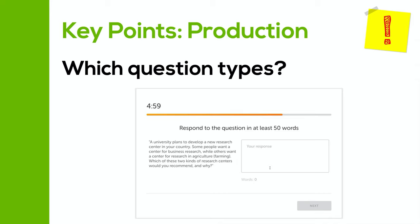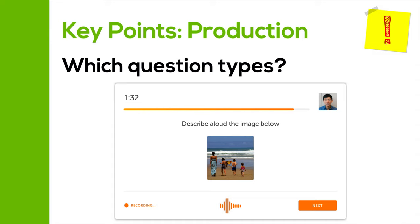So those are the two writing questions that contribute to your production score. Now let's take a look at the speaking ones. The first speaking question is to describe an image through speaking — similar to the writing one, but you have to do it through speaking. You have 90 seconds to describe the image, and you must speak for at least 30 of those 90 seconds. You'll get this once in the test.